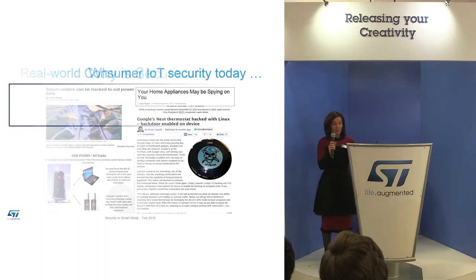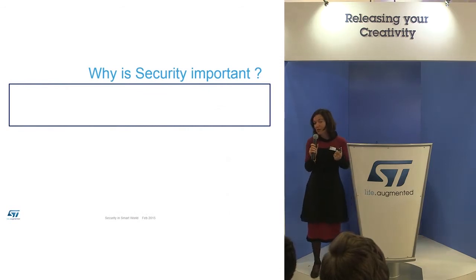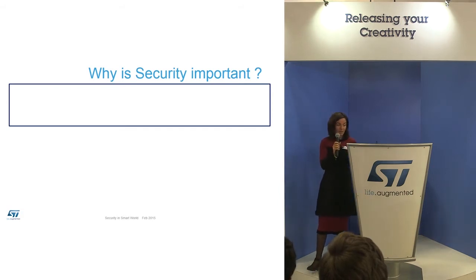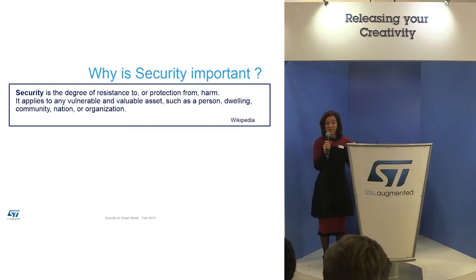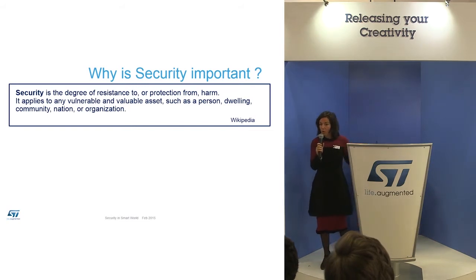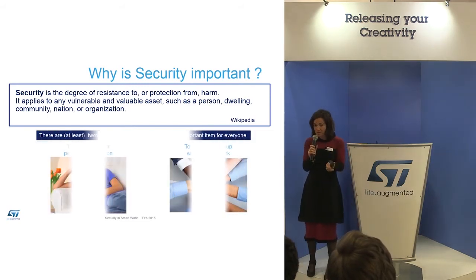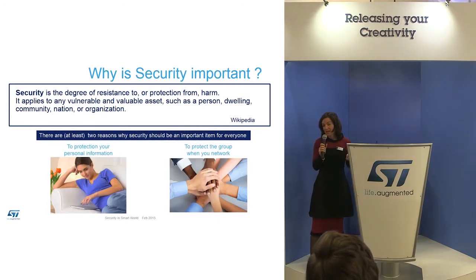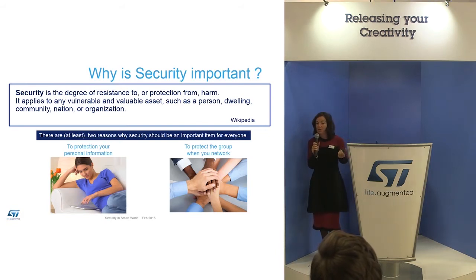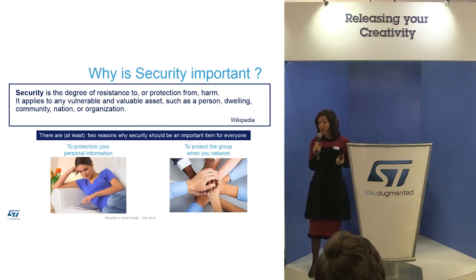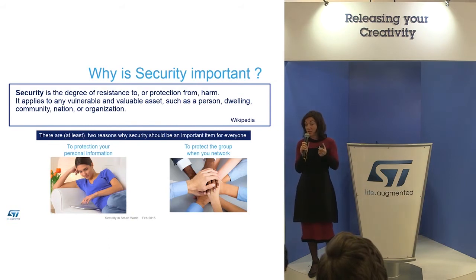Before entering the solution, we have to understand what security really is. The most important thing is to understand that security is the degree of protection from harm. It applies to all your assets — your person, your data, anything you would like to protect. You have at least two main reasons to implement security: the first is to protect your privacy data, and the second is that you have a social responsibility vis-à-vis the network when you connect anything to a network.